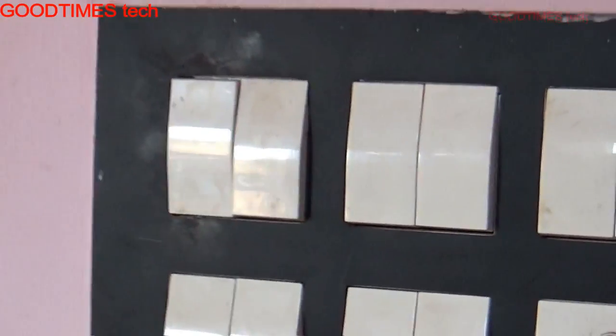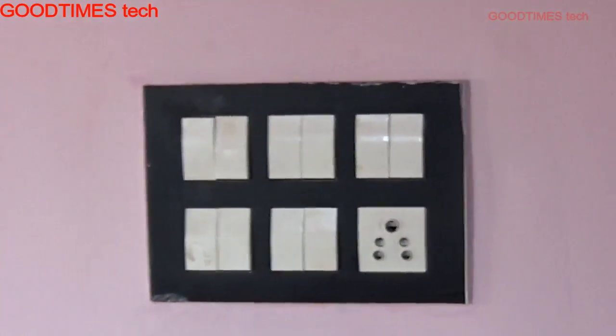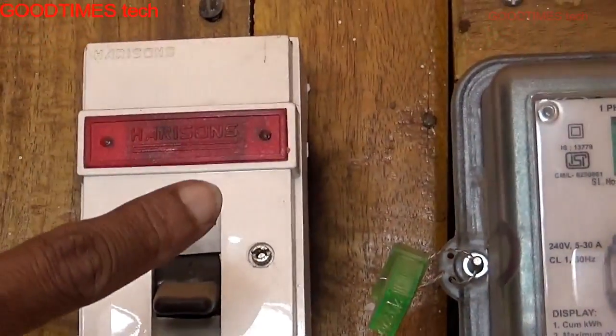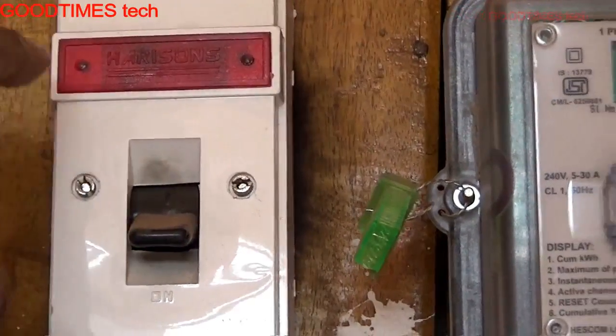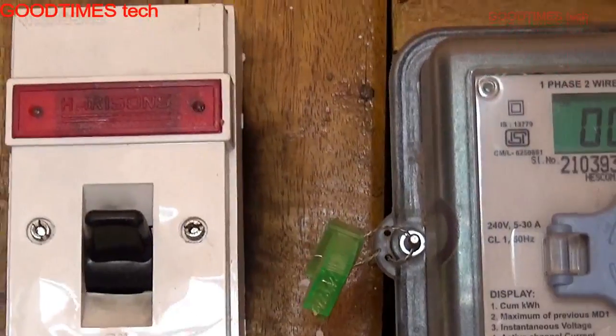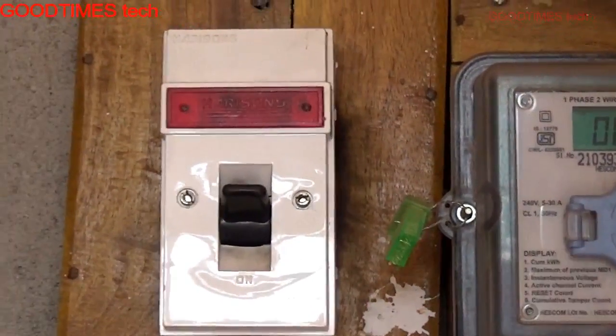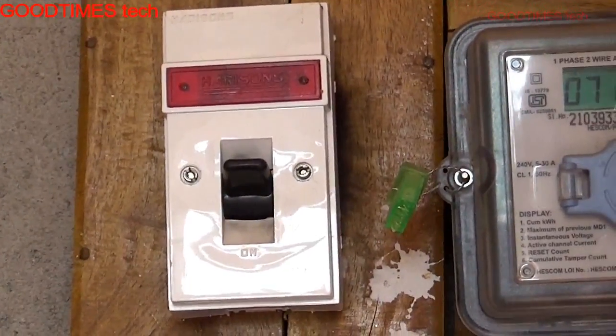For doing this first of all we need to turn off the DP. This is the double pull double throw main switch. Just turn it off. After turning it off we will just try to repair the switch now.